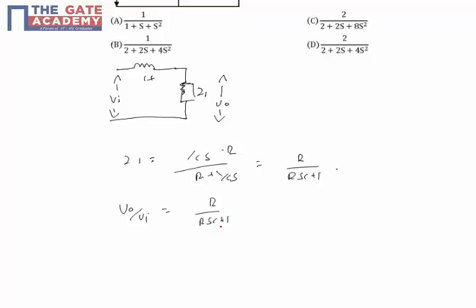That is s into L. So that is equal to R by R plus s squared into RLC plus Ls.